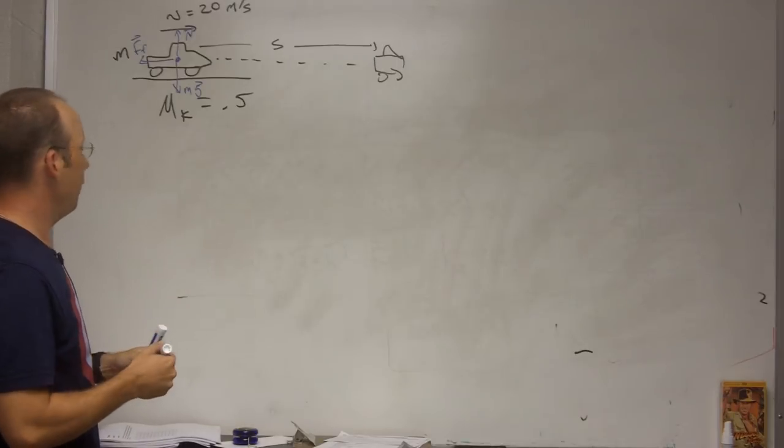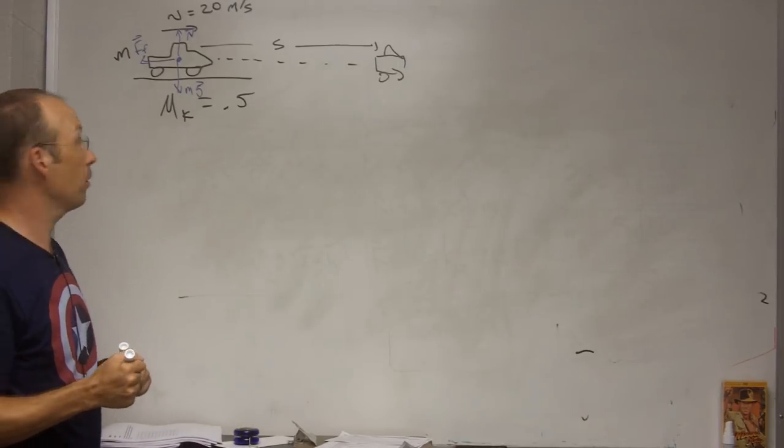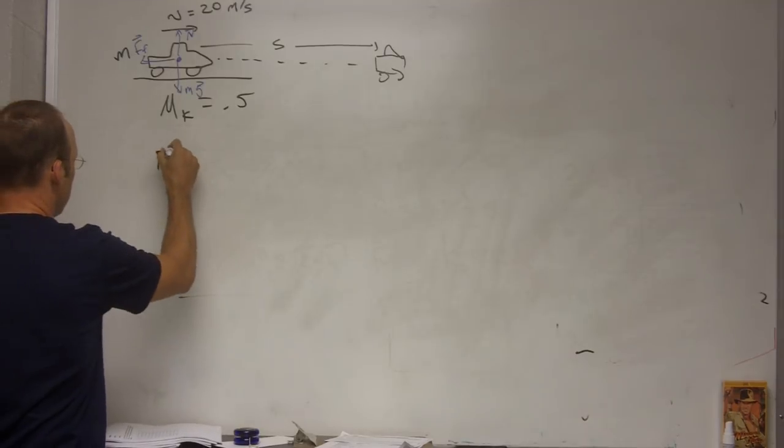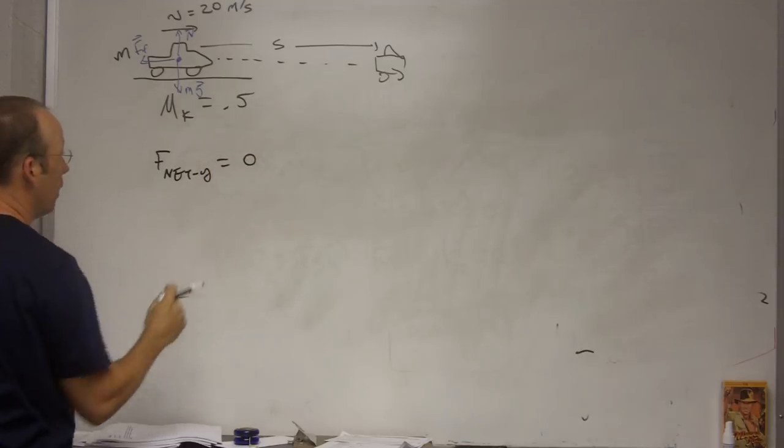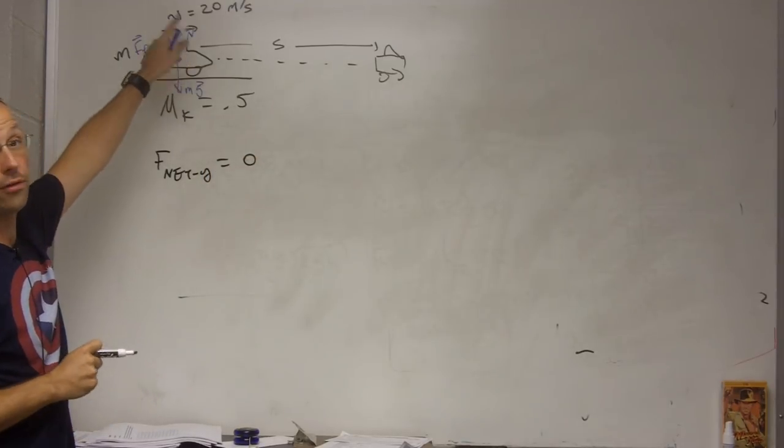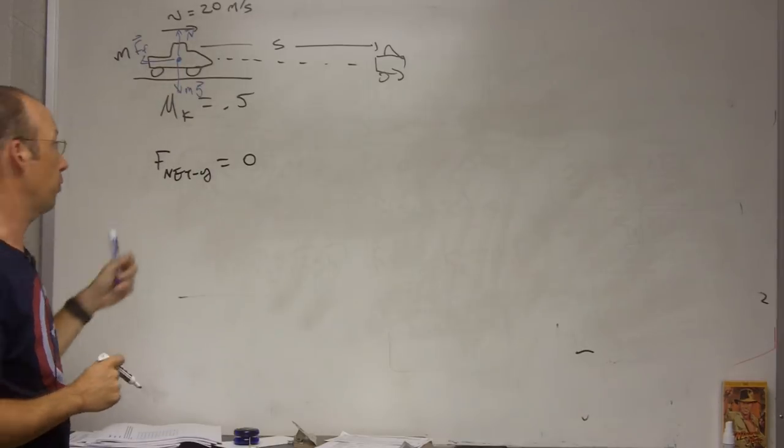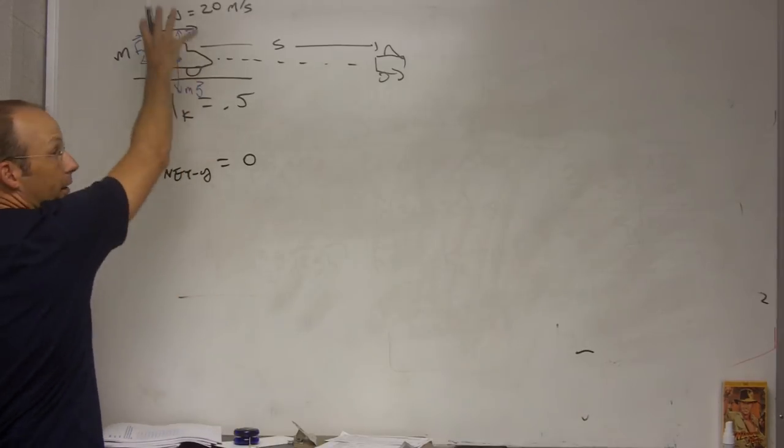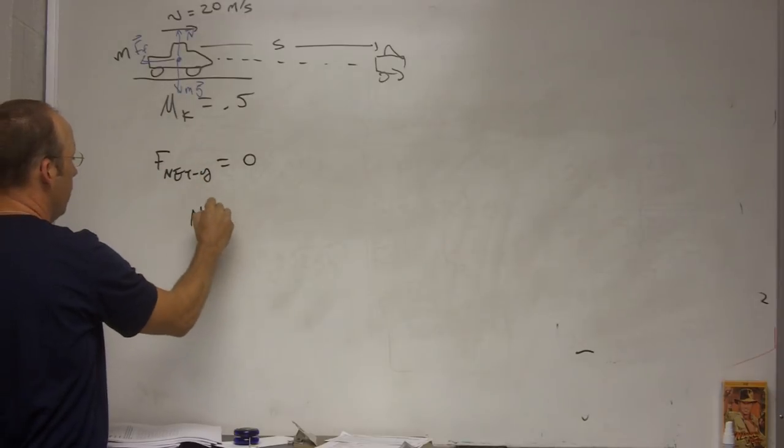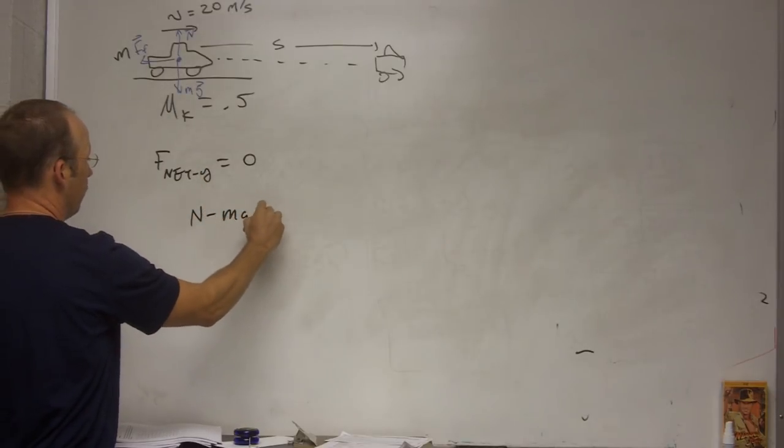So in this case, I do need to look at the net forces in the y direction. Because I need to find the normal force, I need the normal force so I can find the friction force. So in this case, it's not accelerating up or down. So n minus mg equals zero,